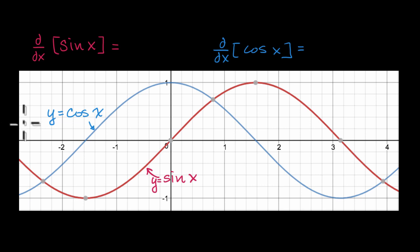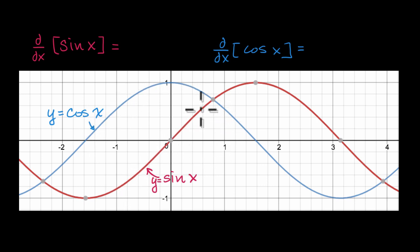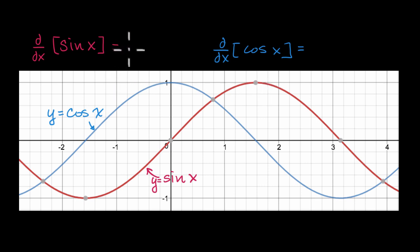What I'd like to do in this video is get an intuitive sense for what the derivative with respect to x of sine of x is, and what the derivative with respect to x of cosine of x is. I've graphed y equals cosine of x in blue and y equals sine of x in red. We're not going to prove what the derivatives are, but we'll get an intuitive sense, and in future videos we'll actually do a proof.